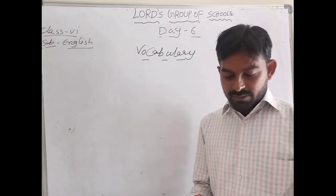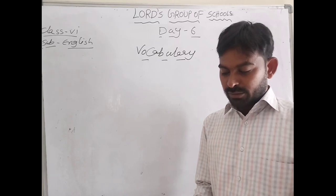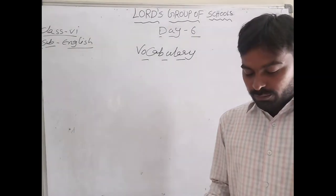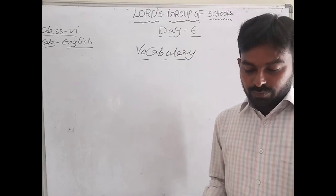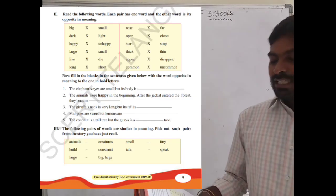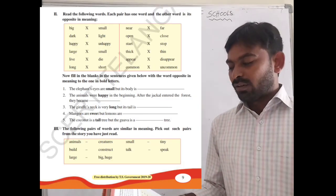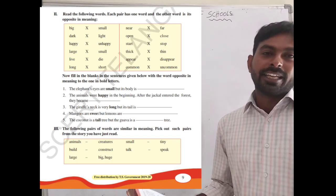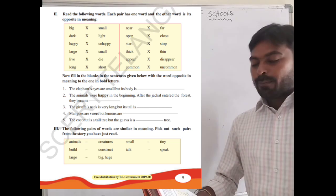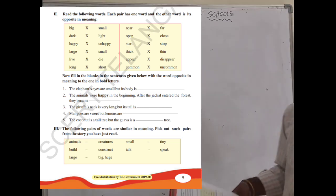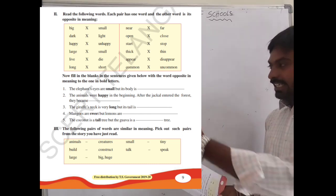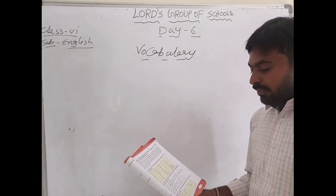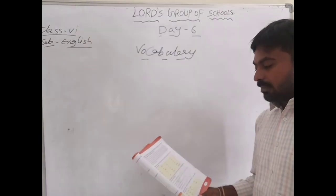So the first part is page number 8 which we have done, and in the meanwhile I told you to do the paragraph. Now come to the second bit — read the following words. Each pair has one word and the other is its opposite in meaning. So here the opposite words are given, and by seeing that we have to write the fill in the blanks below.